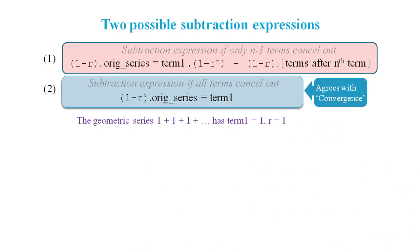Now let's consider the simple geometric series, where the first term is 1 and the common ratio is also 1. Expression 1 reduces to 0 equals 0 for any value of n. This result seems quite reasonable.